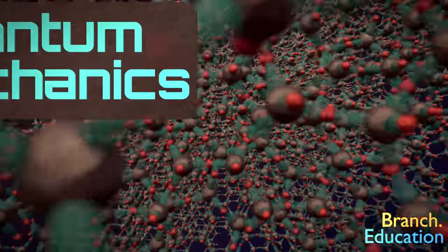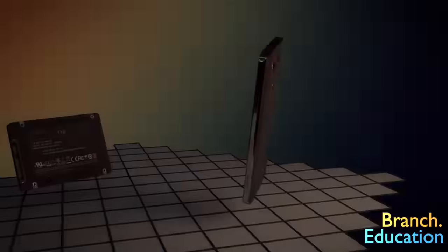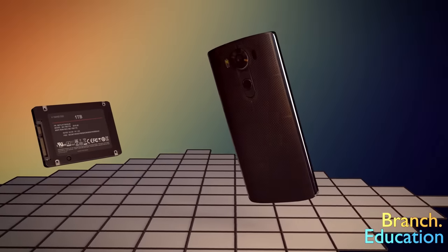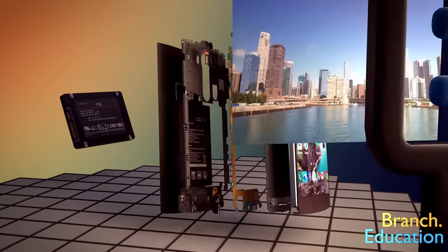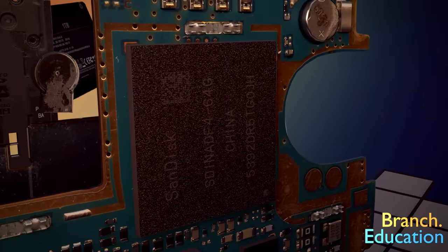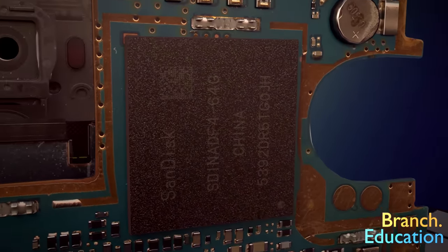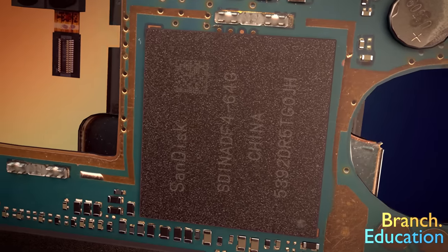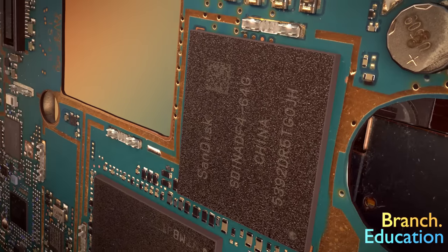But before we get there, let's move on to familiar ground. Here's a smartphone. And whenever you take a picture, receive a message, or download an app, it saves that data into this gray, rectangular, and overall rather boring-looking microchip.